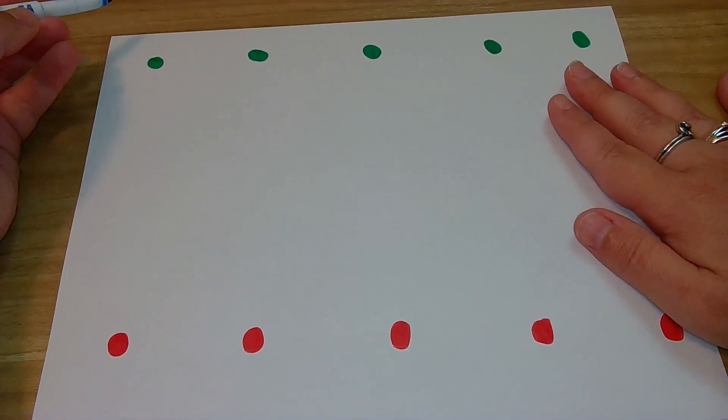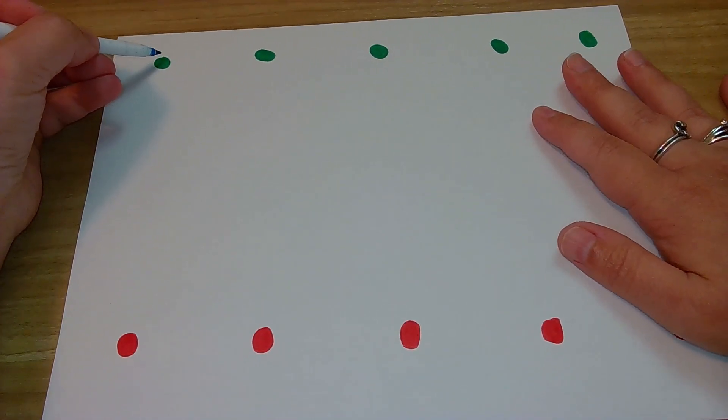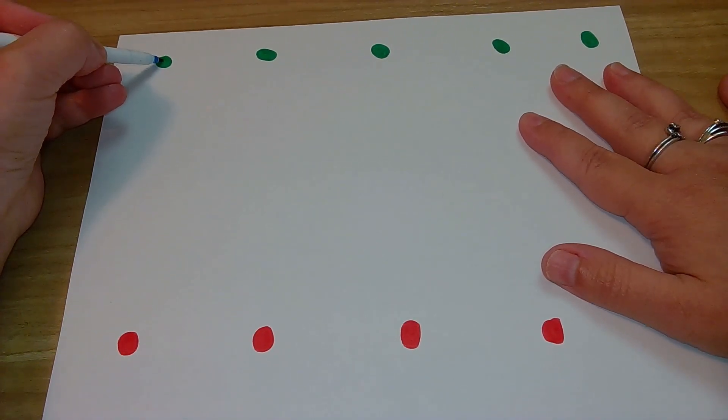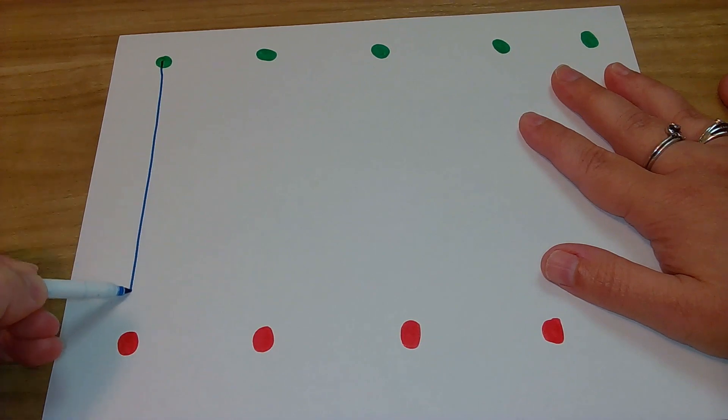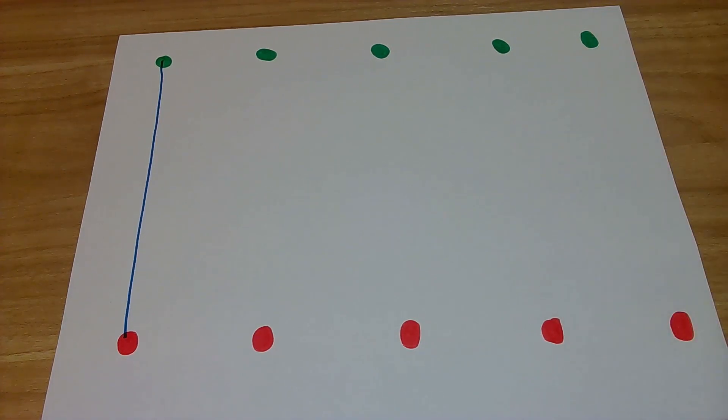Okay friends, here we go. On green dot. Ready? Go. Big line down. Did you stop? Oh, fabulous.